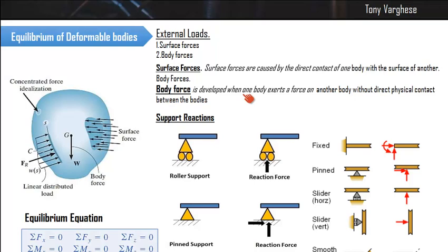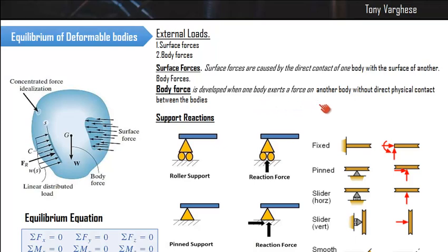The external loads are generally classified into surface force and body force. Surface forces are caused by the direct contact of one body with the surface of another, and the majority of forces experienced on an engineering component are surface forces. The body force is developed when one body exerts a force on another — the example is gravitational pull, and the result is weight.